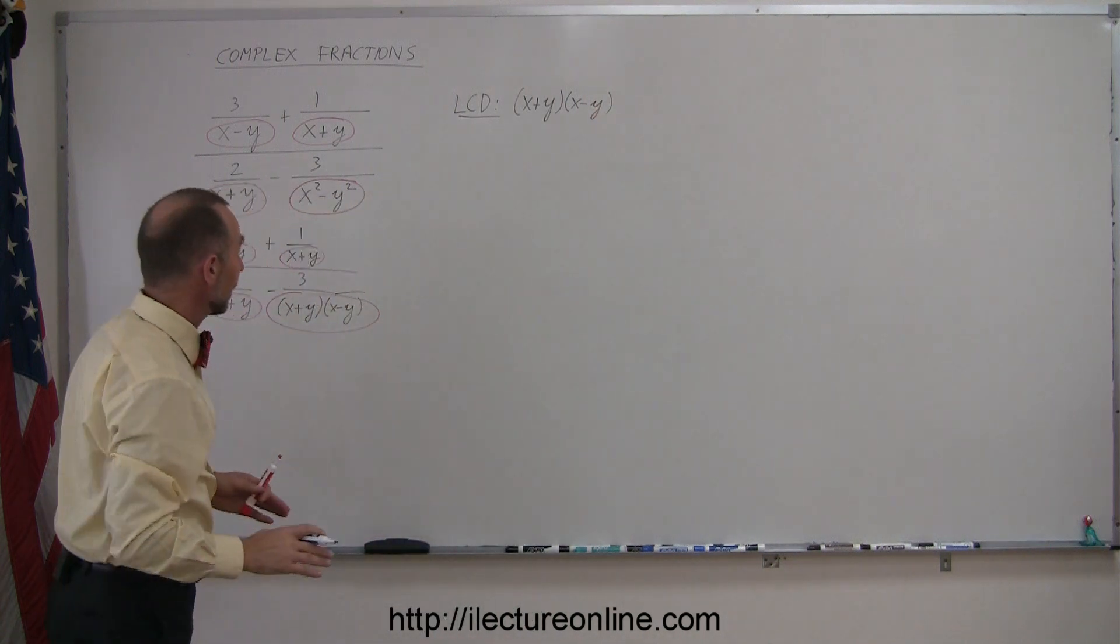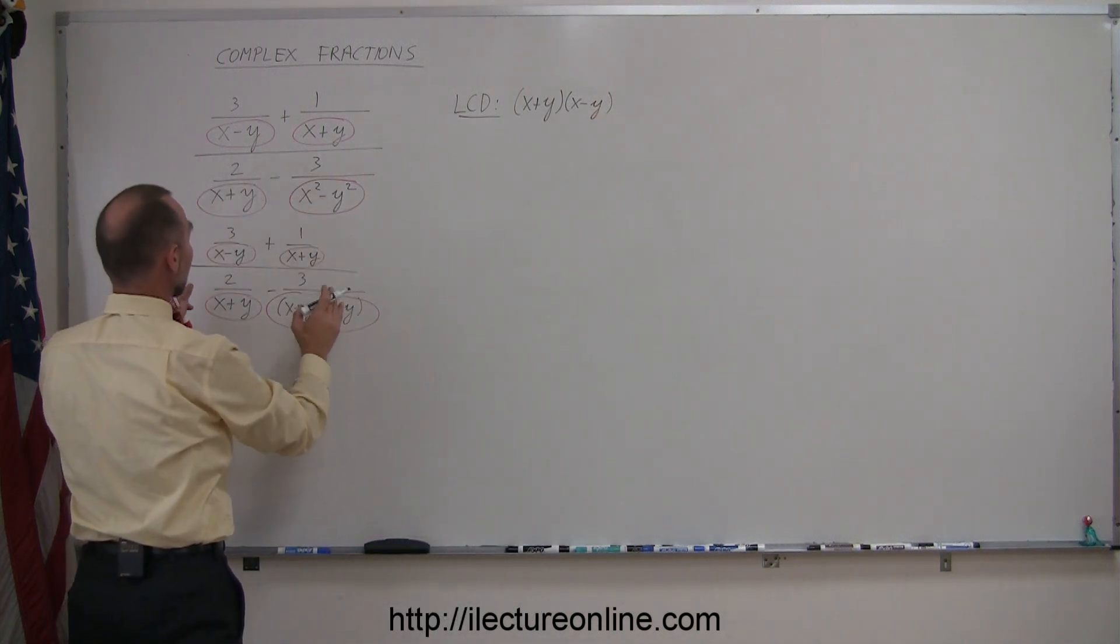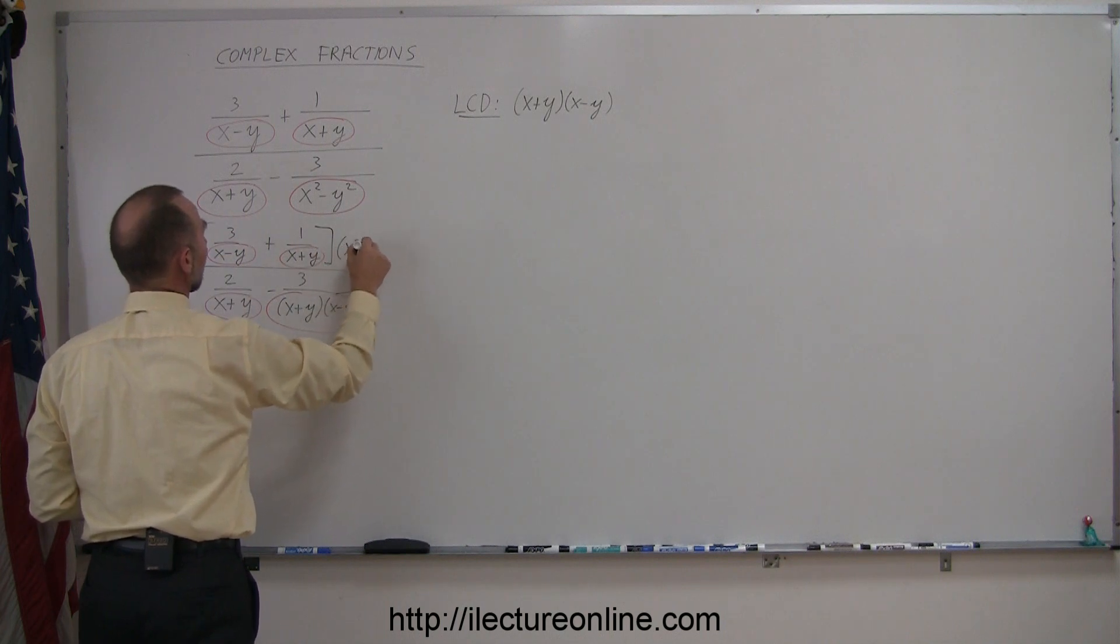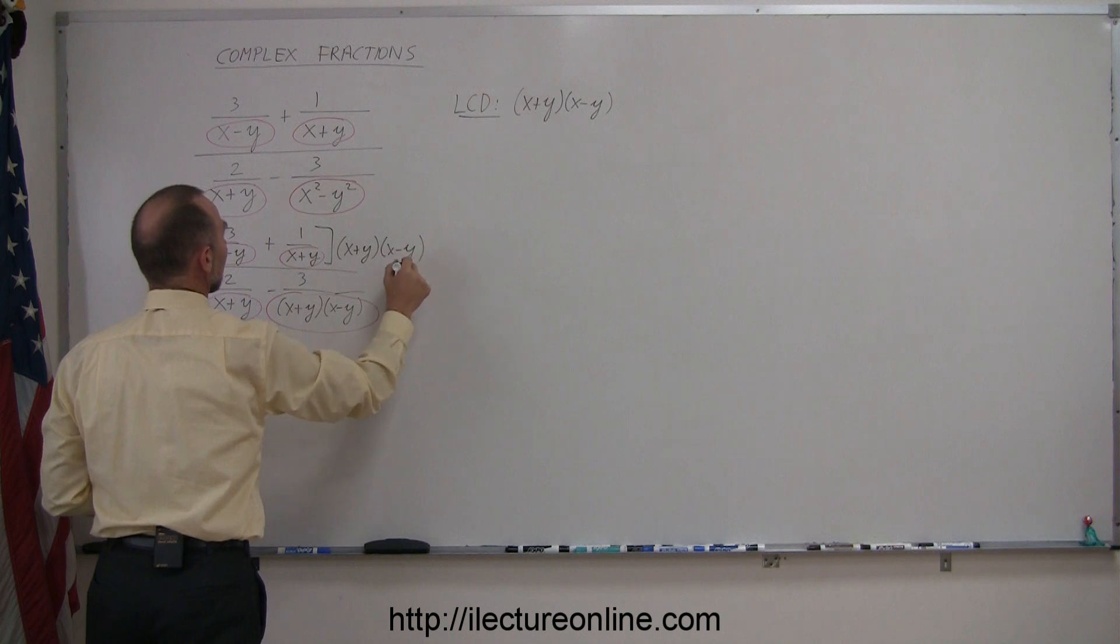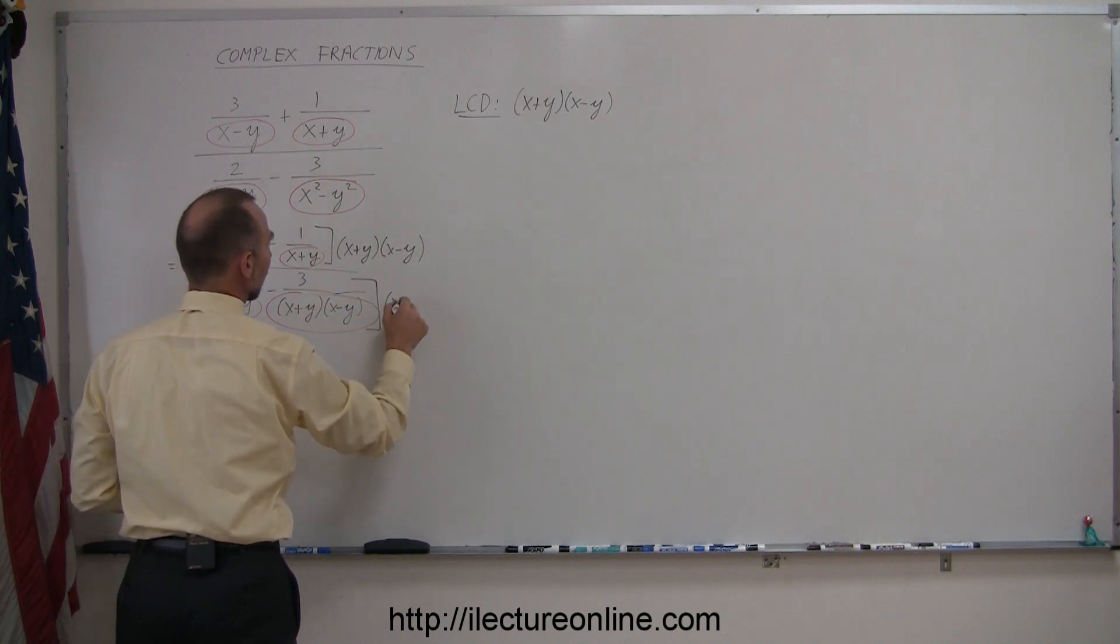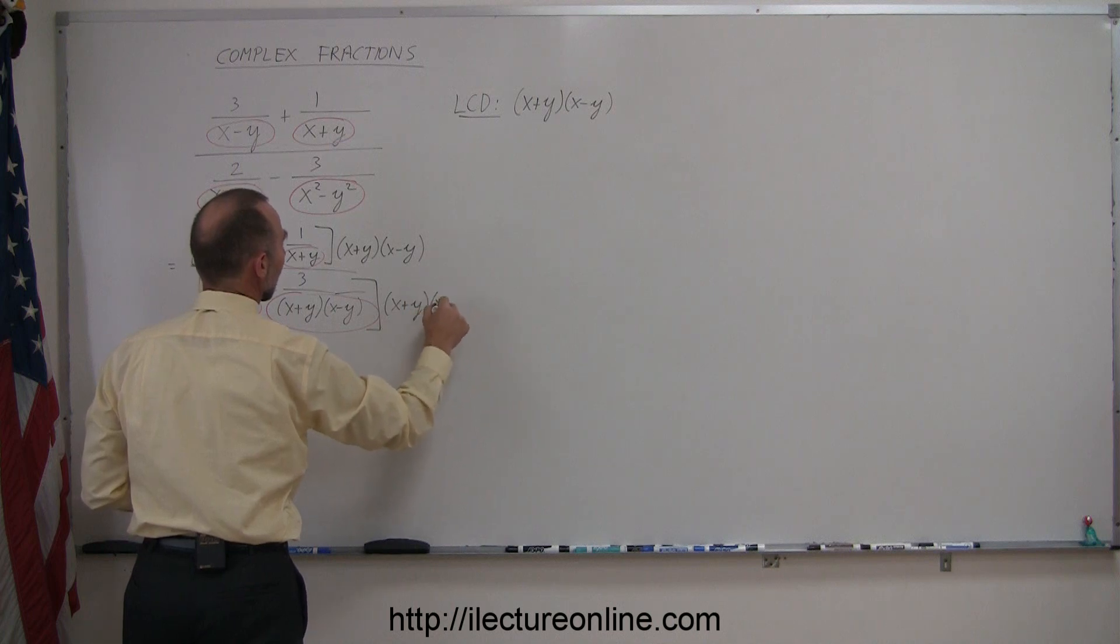Which means I'm going to multiply the numerator and the denominator by the lowest common denominator, so I take the numerator and multiply times x plus y, times x minus y, and then I'll take the denominator, and multiply the whole thing by x plus y, times x minus y.